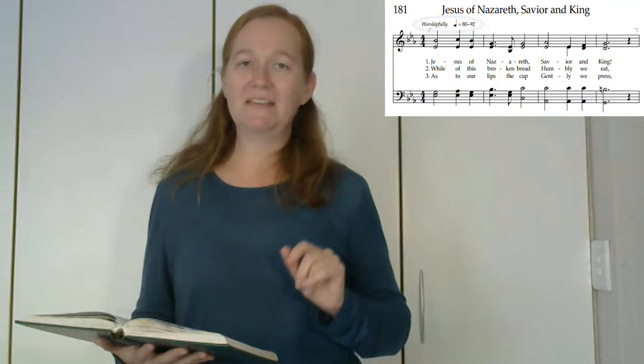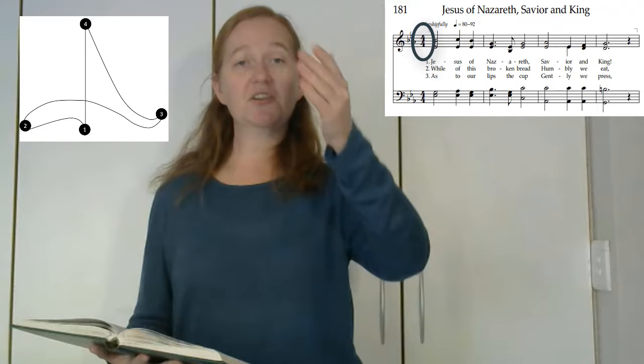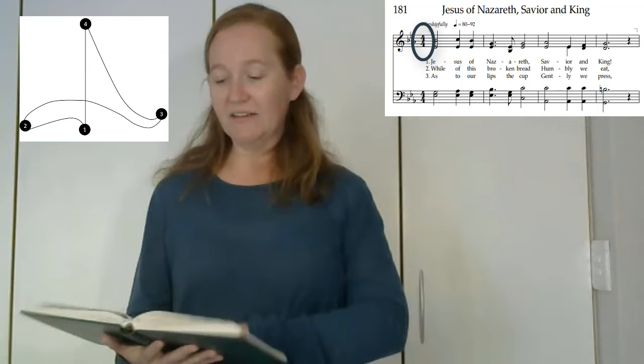The tempo for the hymn is 80 to 92 beats a minute, so it's moderately paced. It's in 4-4 time and without an upbeat, so your preparatory beat takes you to the top and then you'll do one, two, three, four. There's nothing else complicated about the hymn, so we can get straight into it.